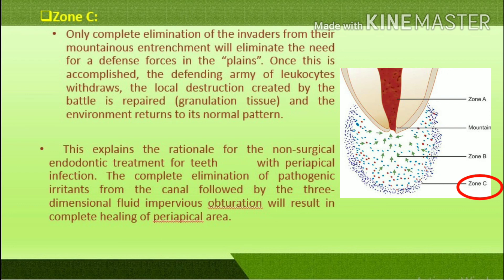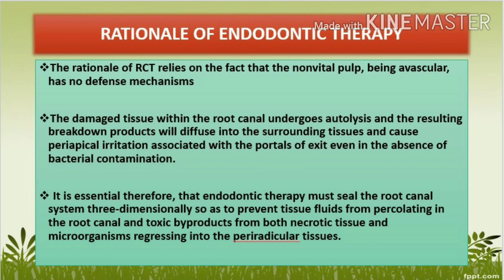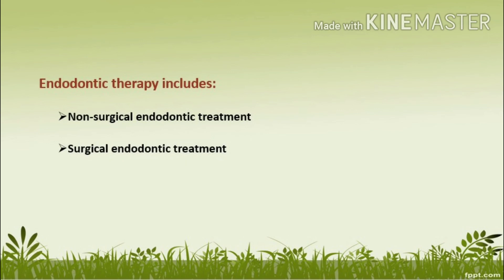The complete elimination of pathogenic irritants from the canal followed by three-dimensional fluid-impervious obturation will result in complete healing of the periapical area. The rationale of RCT relies on the fact that the non-vital pulp, being avascular, has no defense mechanisms. The damaged tissue within the root canal undergoes autolysis and the resulting breakdown products diffuse into surrounding tissues, causing periapical irritation even in the absence of bacterial contamination. Therefore, endodontic therapy must seal the root canal system three-dimensionally to prevent tissue fluids from percolating in and toxic byproducts from regressing into periradicular tissues. Endodontic therapy includes non-surgical and surgical endodontic treatment.